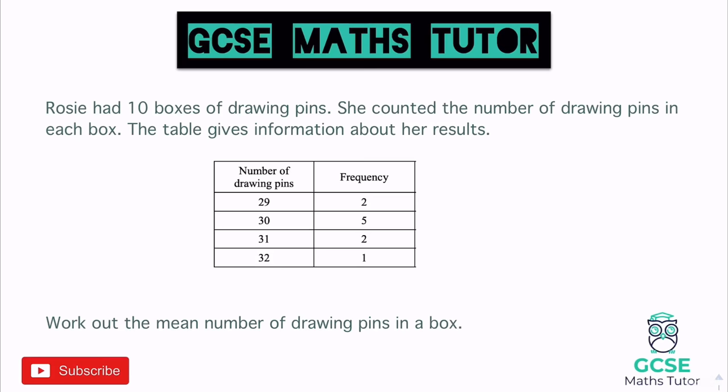In today's video we're going to have a look at averages from a table. We're primarily going to focus on the mean from a table - both normal frequency tables and grouped frequency tables - and look at the difference between working out the means in both. We'll finish off looking at median, mode, and range from a table as well. Grab a piece of paper and pen and let's get started.